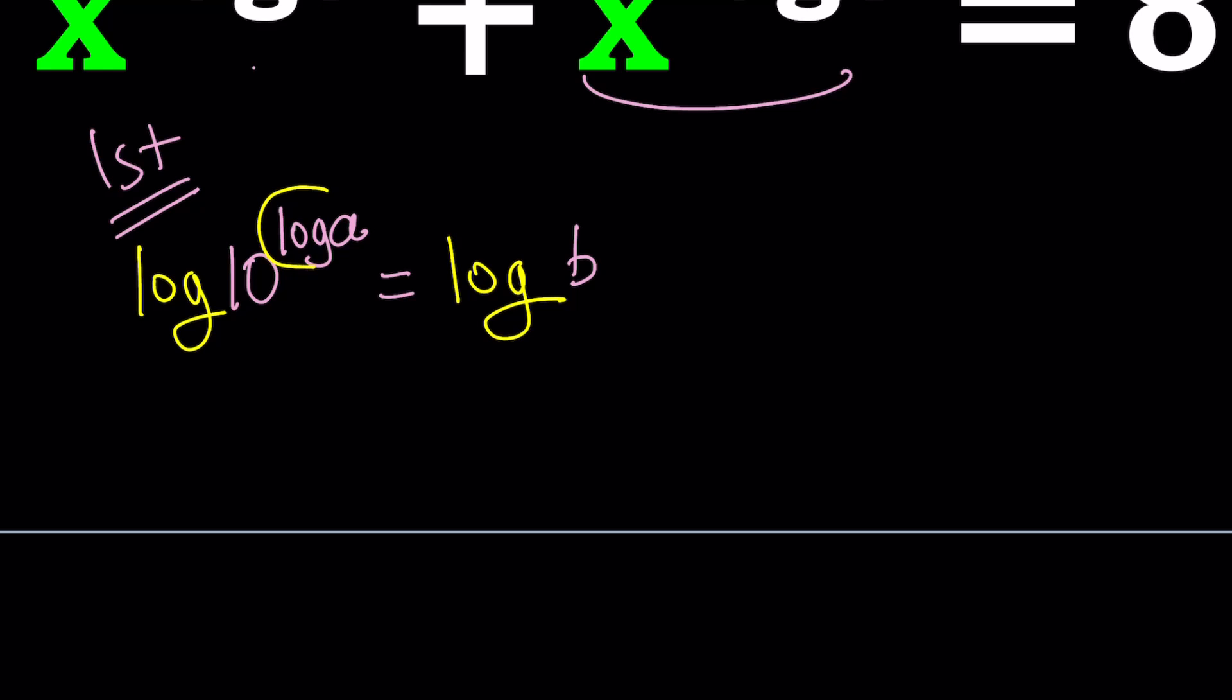From properties of logarithms, this is going to be coming down. And log a times log 10 is going to be log b. But log 10 is just 1 because it's log 10 with base 10, and this gives us log a equals log b. That's an increasing function, like I said earlier. So a equals b is automatically implied. Wait a minute. You mean a equals b or b equals a? What does that mean?